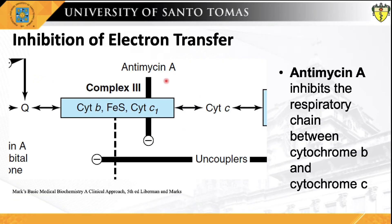The next poison is antimycin A, a potent and hazardous pesticide or fish poison and a secondary metabolite produced by Streptomyces bacteria. Antimycin A inhibits the flow of electrons through complex III of the electron transport chain by blocking the passage of electrons from cytochrome B to cytochrome C. Antimycin is widely used in research to study cellular respiration because of its potent ability to block the electron transport chain.